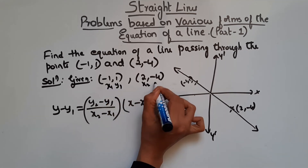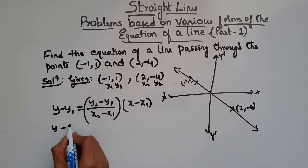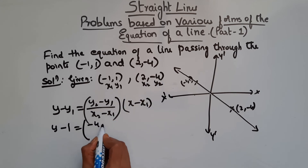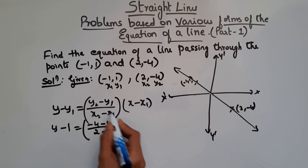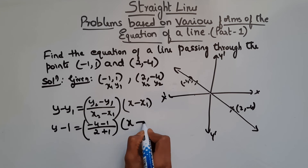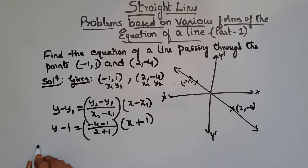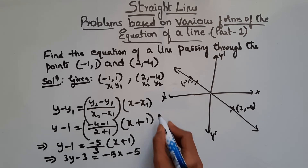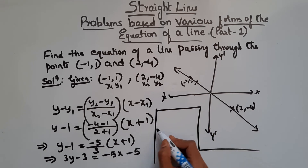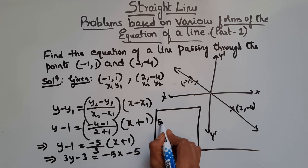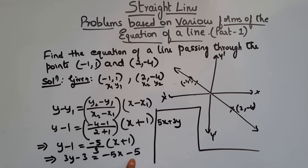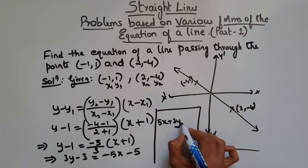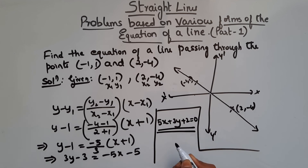Substituting: y - 1 = [(-4 - 1)/(2 - (-1))](x - (-1)), which gives y - 1 = (-5/3)(x + 1). Multiplying through by 3: 3y - 3 = -5x - 5. Rearranging: 5x + 3y + 2 = 0. This is the equation of the line.